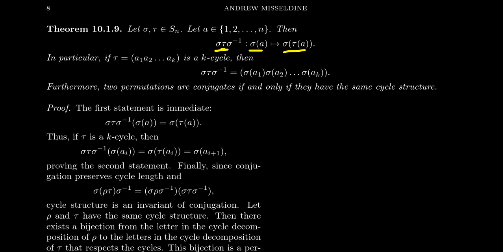In particular, if tau is a k-cycle — A1 goes to A2, A2 goes to A3, all the way up to AK which wraps back to A1 — then if you conjugate that k-cycle tau by sigma, this will produce the k-cycle: sigma(A1) goes to sigma(A2), which goes to sigma(A3), all the way up to sigma(AK) wrapping back to sigma(A1). So if you conjugate a cycle by a permutation, you just take all the numbers that were in the cycle and look at their images with respect to sigma.